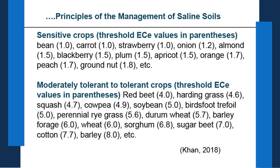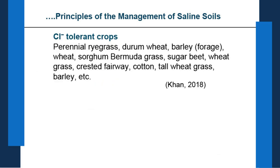Moderately tolerant to tolerant crops (with threshold ECe values): red beet (4), harding grass (4.6), squash (4.7), cowpea (4.9), soybean (5), perennial rye grass (5.6), durum wheat (5.7), barley forage (6), wheat (6), sorghum (6.8), sugar beet (7), and barley (8). Crops tolerant to chloride include perennial rye grass, durum wheat, barley, wheat, sorghum, bermuda grass, sugar beet, wheat grass, cotton, tall wheat grass and barley.